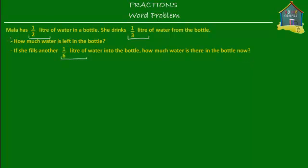There are two questions that we have to find the answer to: A and B. Let's see what we have. Mala has half a liter of water in a bottle. If we put that on a model diagram, then we'll have to make a model for one liter of water.